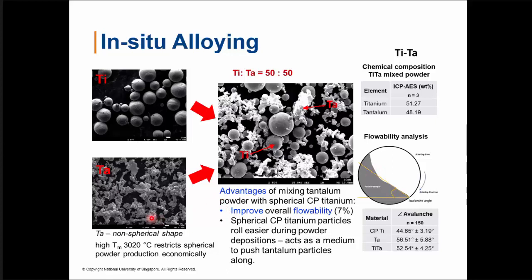Another advantage of using powder mixtures is especially for refractory alloys such as tantalum, which has a very high melting point — making it very costly to create spherical powder from tantalum via atomization due to the high energy input required. With a powder mixture, we can use non-spherical secondary material of lower production cost, while the spherical primary material acts as a medium to push the non-spherical particles during deposition. Overall, the flowability still remains within the acceptable range for 3D printing while reducing the overall powder cost.